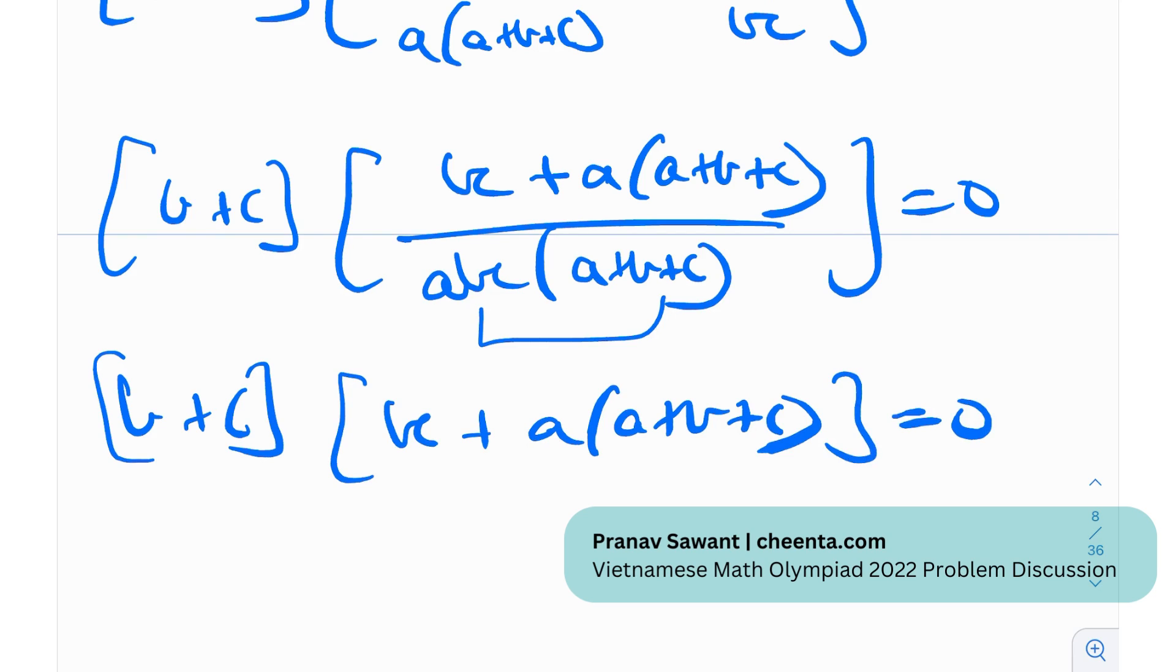Now you can see that all of these are non-zero quantities, so I can just ignore them in the denominator, just multiply that quantity on both sides. So we'll be left with (b+c) times [bc + a(a+b+c)] equals 0. So yeah, note that we can only do this because this is non-zero, right? a+b+c is 22 and a, b, c are obviously natural numbers.